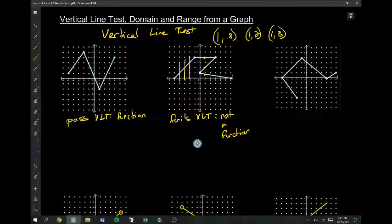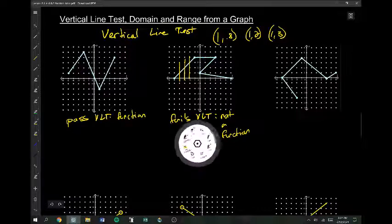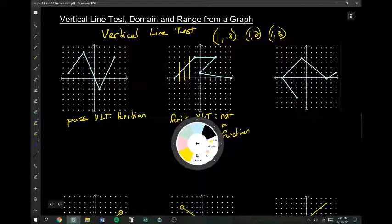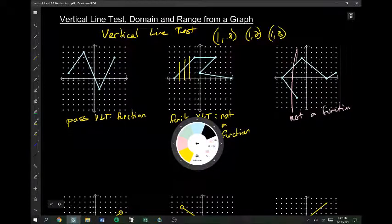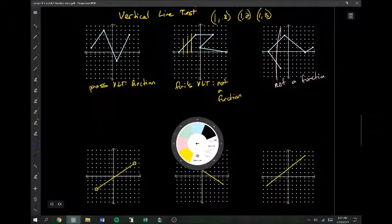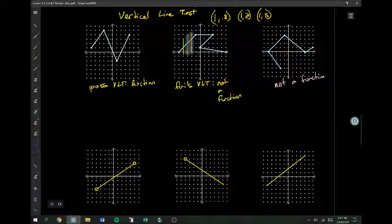Now, not being a function isn't a bad thing. It just means that what you have doesn't have the functional relationship where one input goes to only one output. So, we can't call it a function. Same with this one here. It fails the vertical line test, not a function. These three down here are functions because they're all just straight lines. So, there's the vertical line test. It's a quick way to see if a graph is a function or not.